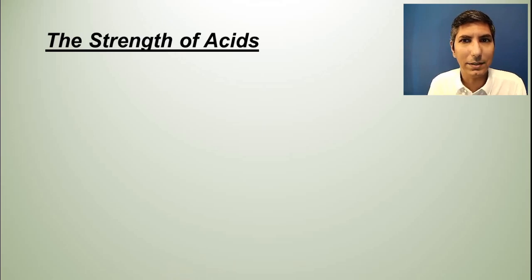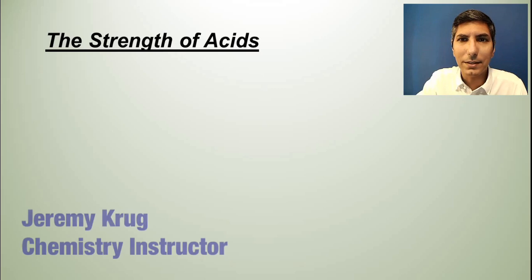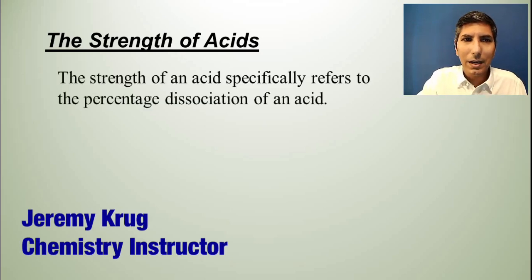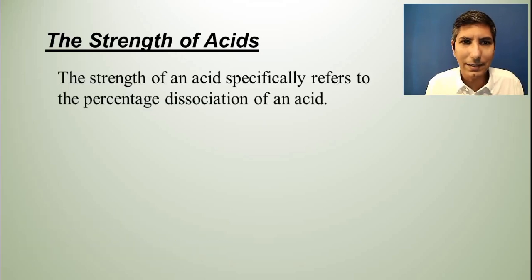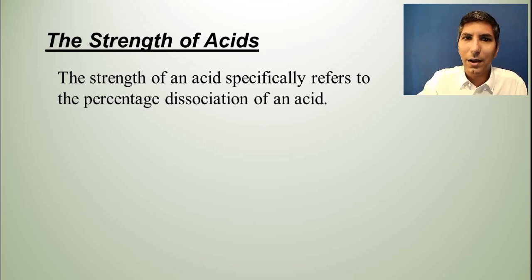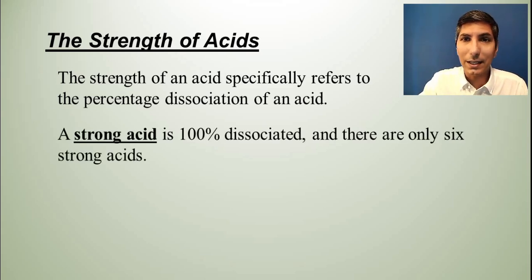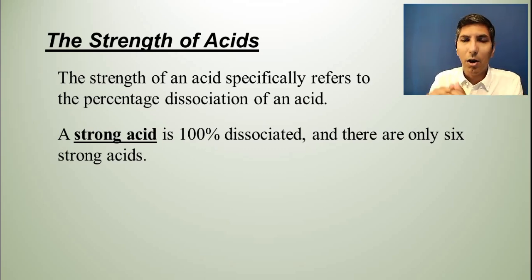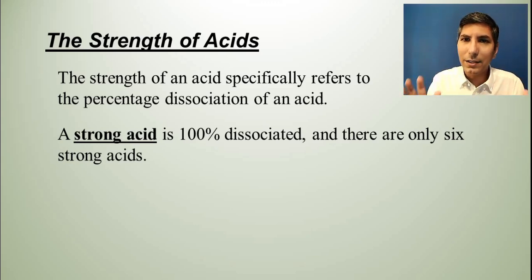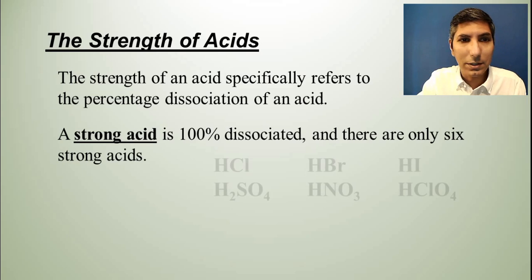As we start our discussion of acids and bases, we're going to begin by looking at the strength of acids. We know that the strength of an acid specifically refers to the percentage dissociation of that acid. A strong acid is one that is 100% dissociated, meaning that all of its molecules break apart into their component ions when in aqueous solution.